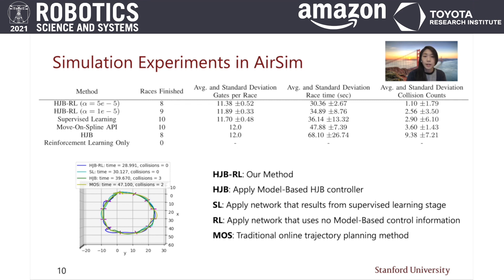We conducted experiments in the AirSim simulation environment on a full race track of 12 gates. We found that HJBRL had a faster average race time than the opponent methods, including a more traditional online trajectory optimization method.